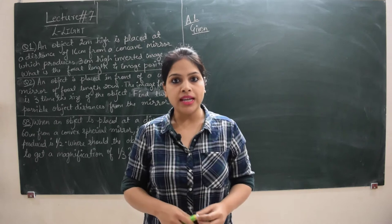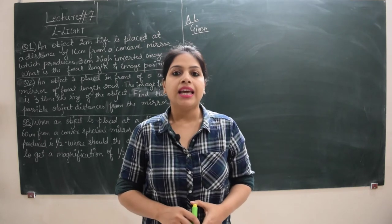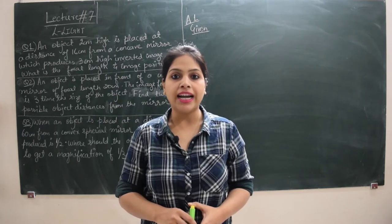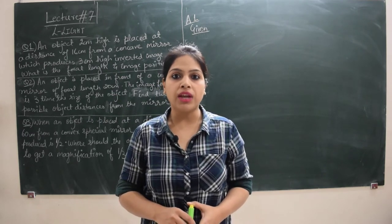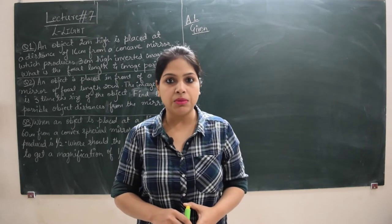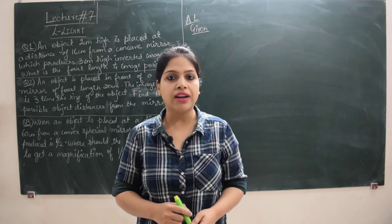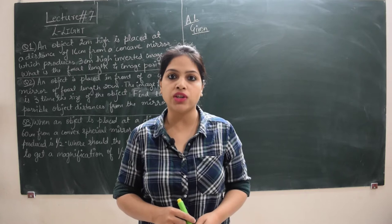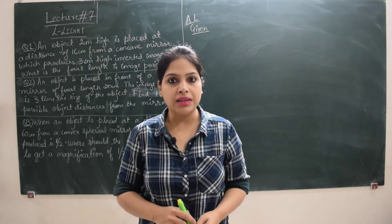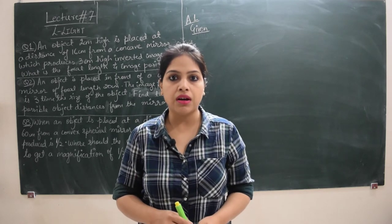Before I start with today's lecture, I'd like to make one correction in lecture number 6. In the second numerical that we did in lecture number 6, the height of the image that we obtained was minus 2.4 meters and not centimeters. Please make the correction — the unit of height of the image in question number 2 of lecture 6 is meters, not centimeters, as the height of the object was given in meters: it was 1.2 meters.